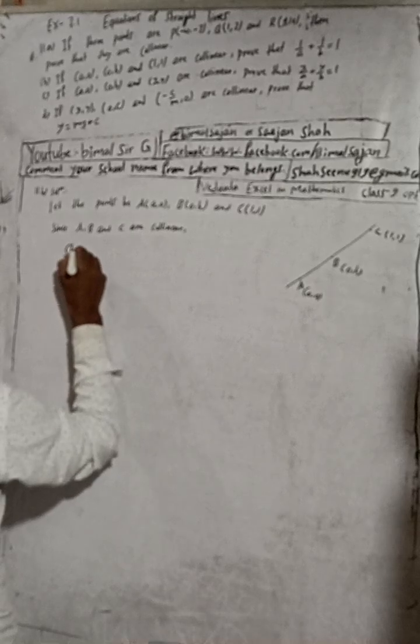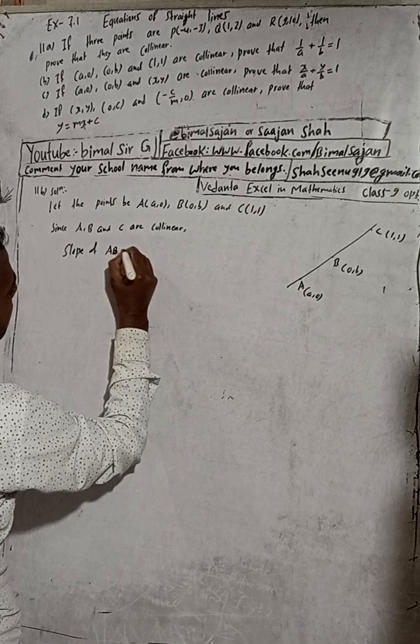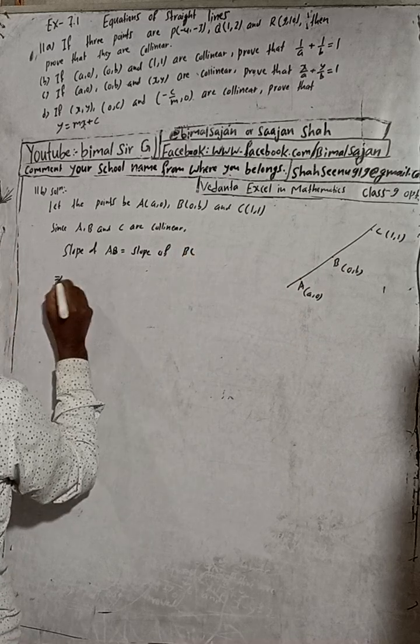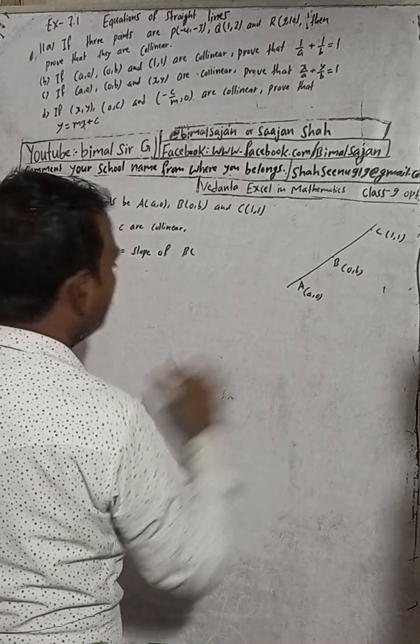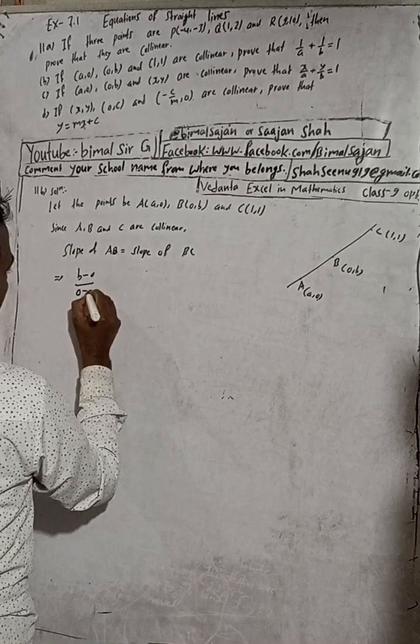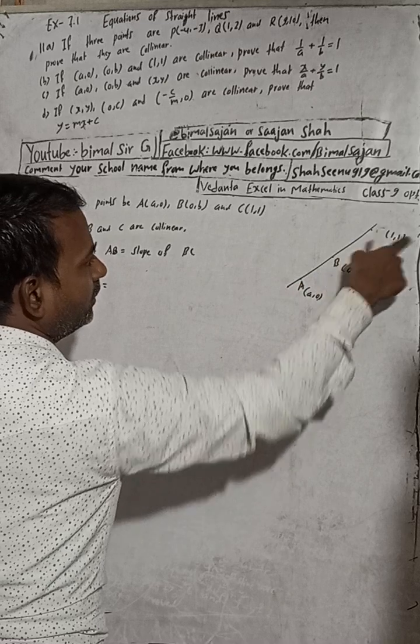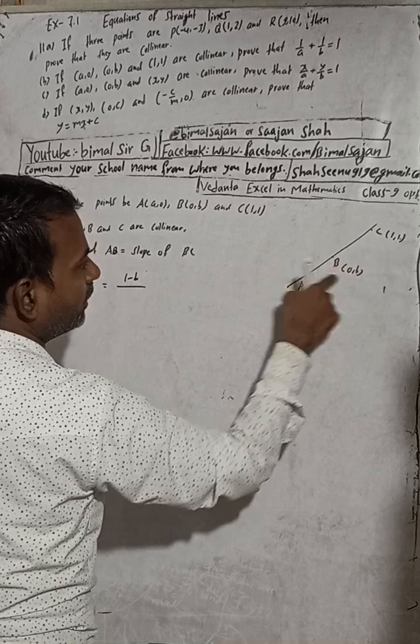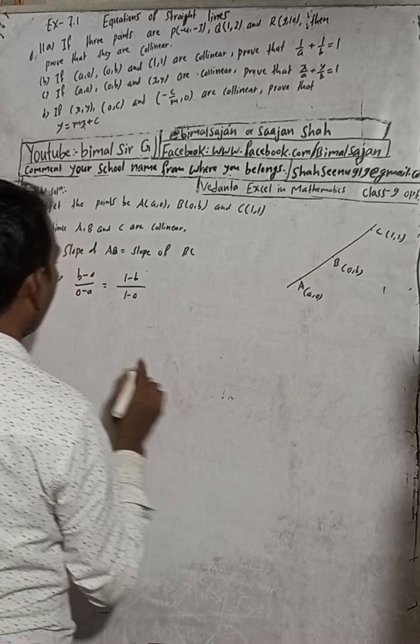Slope of AB is equal to slope of BC. This is (b-0)/(0-a), which means b/(0-a) = b/(-a). Using the formula y2-y1 divided by x2-x1. In the same way, slope of BC is (1-b)/(1-0), that means y2-y1 by x2-x1. Now when we solve this.